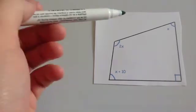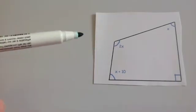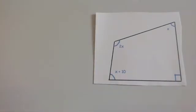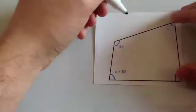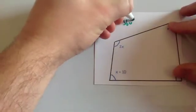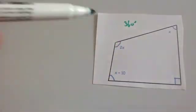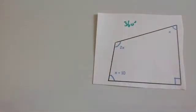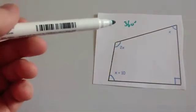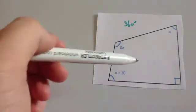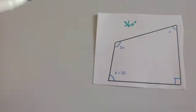Now we have a question involving angles. We've got a quadrilateral. It's important to remember that the angles in a quadrilateral add up to 360 degrees. So when you add the four angles together you get 360 degrees. Let's form an equation and set it equal to 360.